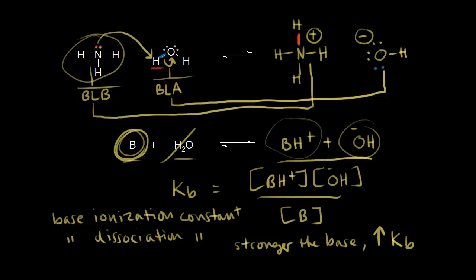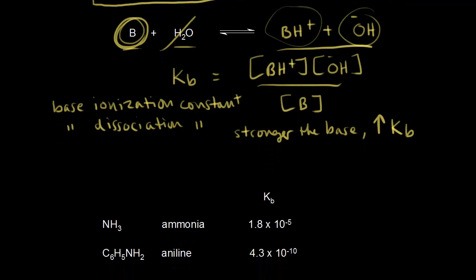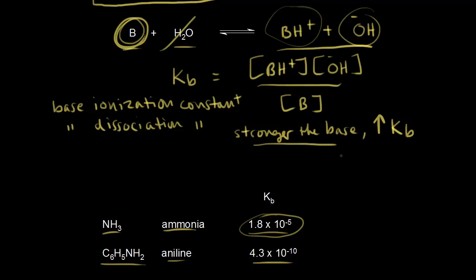Let's compare two weak bases: ammonia and aniline. NH3 (ammonia) has a KB of 1.8 × 10⁻⁵. Aniline, C6H5NH2, has a much smaller KB of 4.3 × 10⁻¹⁰. Since ammonia has a higher KB value, ammonia is the stronger base. Both are weak bases, but ammonia is the stronger of the two.